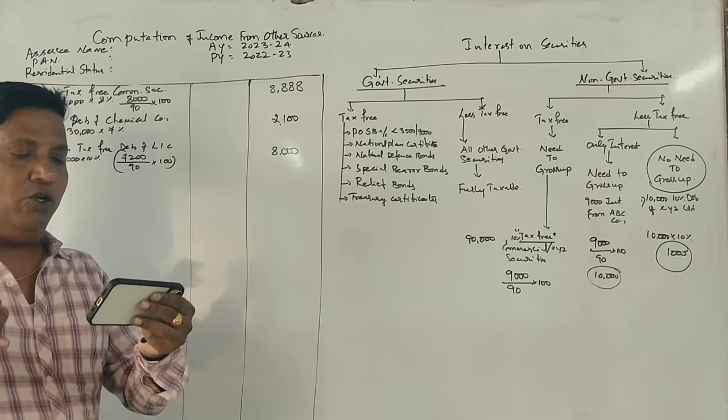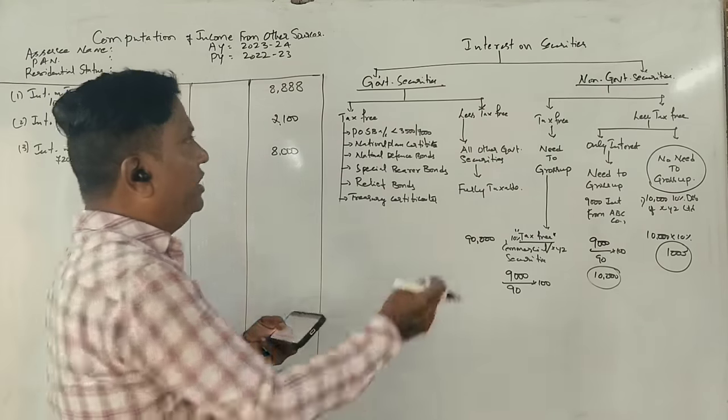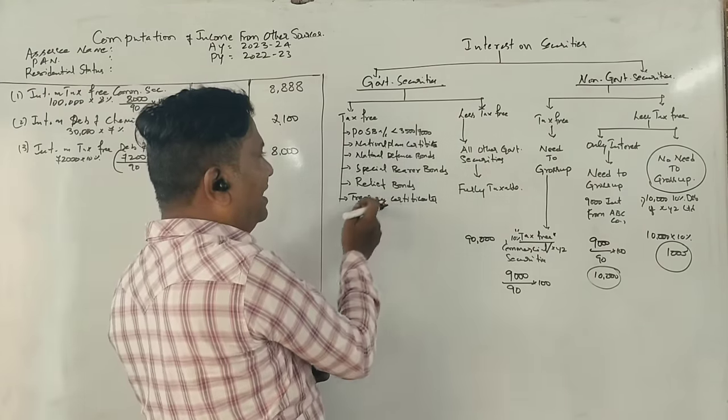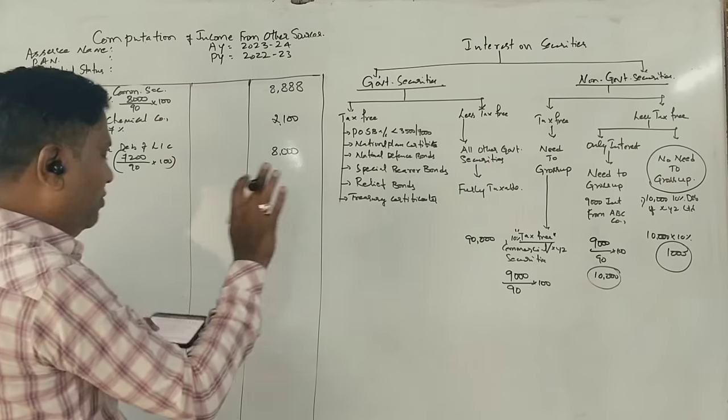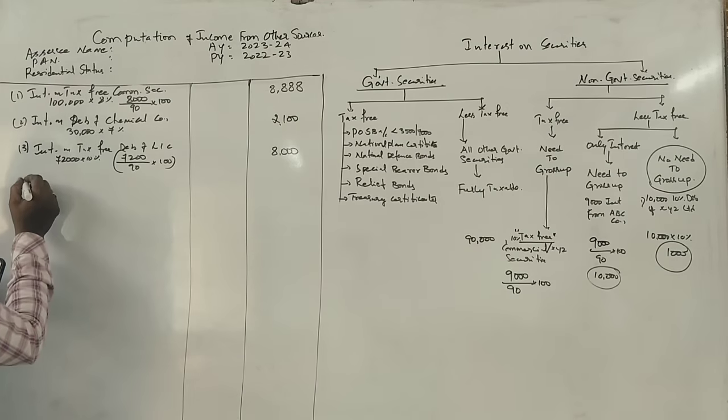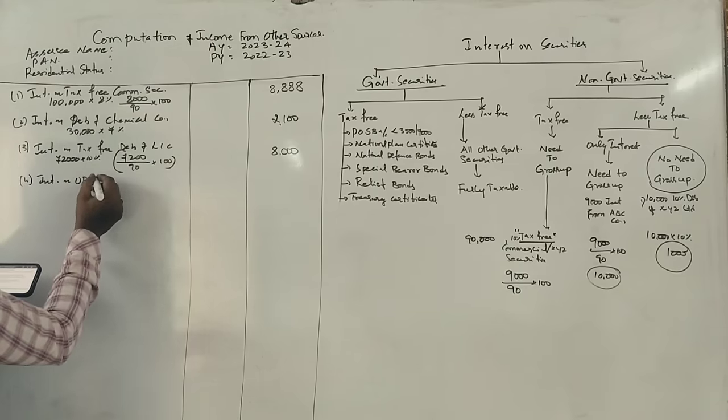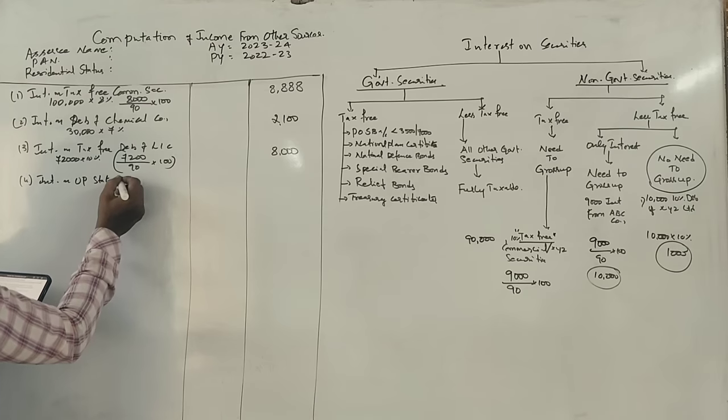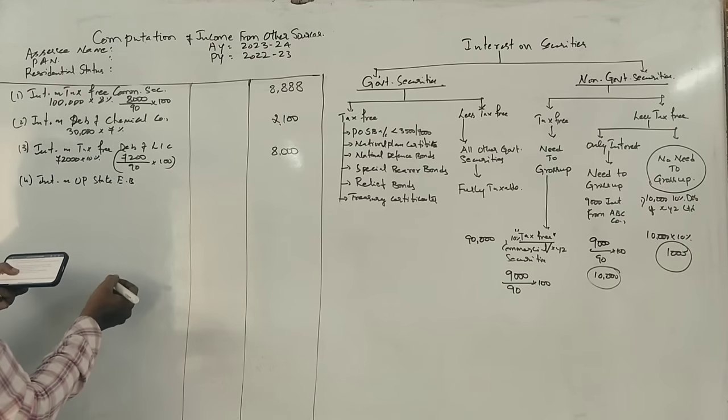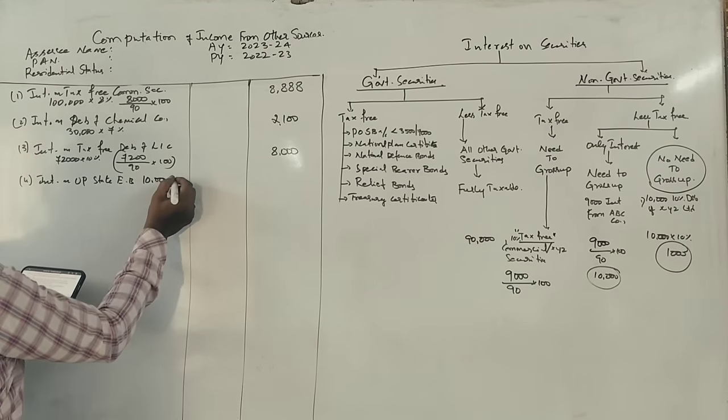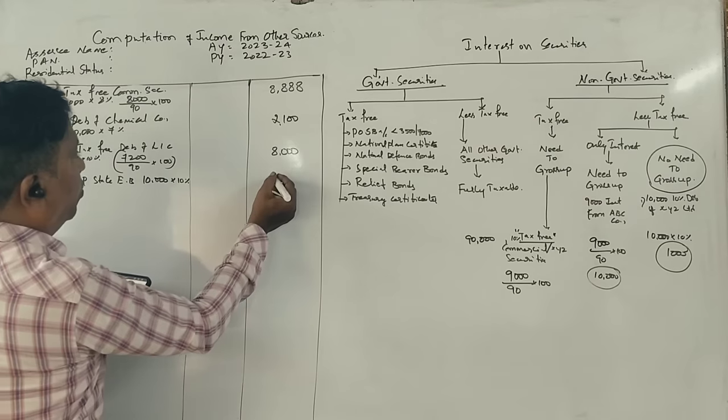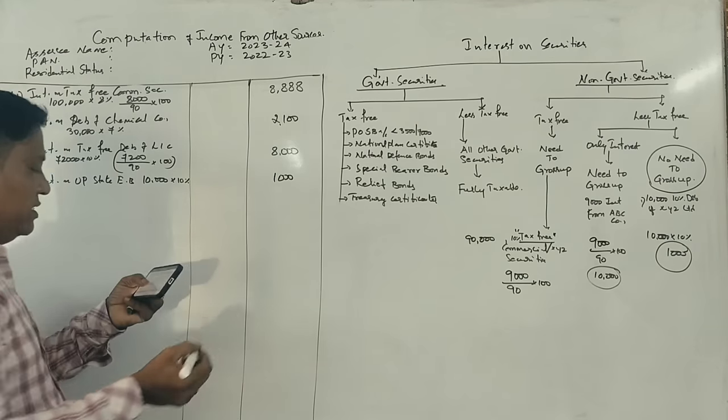Next, Rs. 10,000, 10% U.P. State Electricity Bonds. This is government, but this is fully taxable. Interest on U.P. State Electricity Bonds: 10,000 into 10% equals Rs. 1,000, fully taxable.